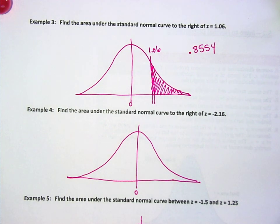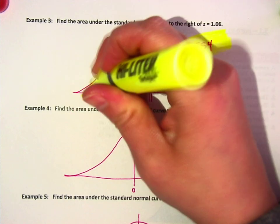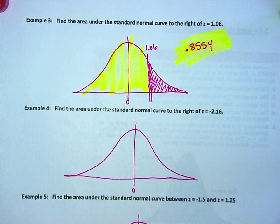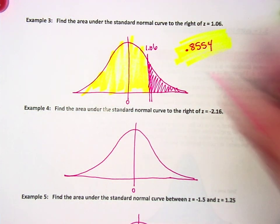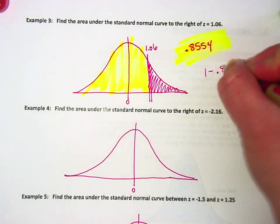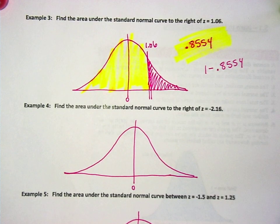Subtract that from one, so this area right here. Do you see what I mean? So there's 85% to the left, so what Thomas said we need to do is we need to take one minus 0.8554, which is 0.1446.